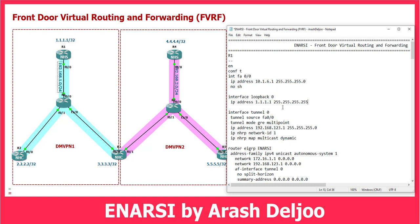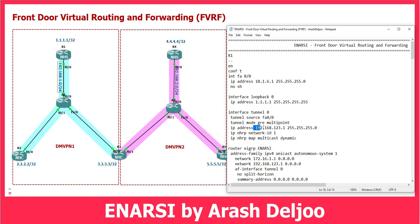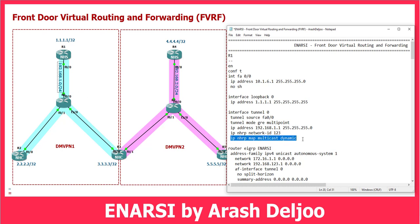Then we should configure interface tunnel 0. You can configure this scenario with DMVPN phase 1, phase 2, or phase 3 — let me use phase 3. Tunnel source is FastEthernet 0/0. Tunnel mode is GRE multipoint. IP address is 192.168.10.1 /24. We should configure IP NHRP network ID of 123, meaning Routers 1, 2, and 3. Then IP NHRP map multicast dynamic.